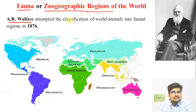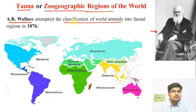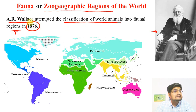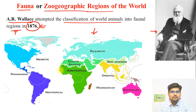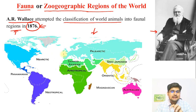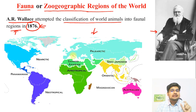A.R. Wallace was a zoologist who attempted the first classification of world animals — that is fauna — into different regions in 1876. That year is important to remember. Looking at the world map, zoogeographic regions tell us which type of fauna, that is animals, exist in which region. On that basis, the world has been classified into different regions.